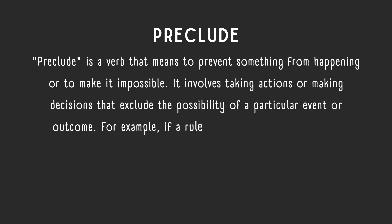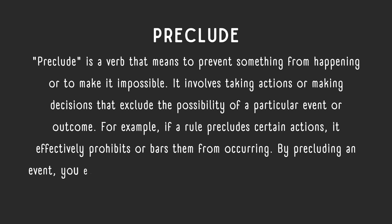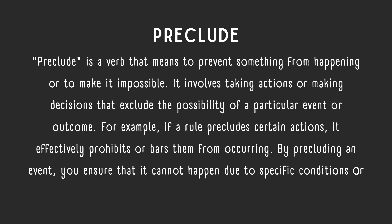For example, if a rule precludes certain actions, it effectively prohibits or bars them from occurring. By precluding an event, you ensure that it cannot happen due to specific conditions or constraints that you have set in place.